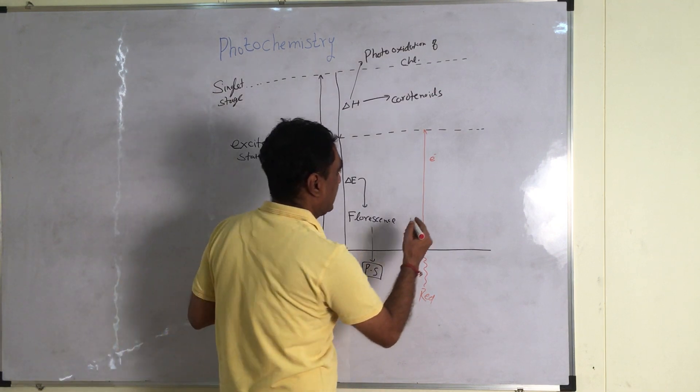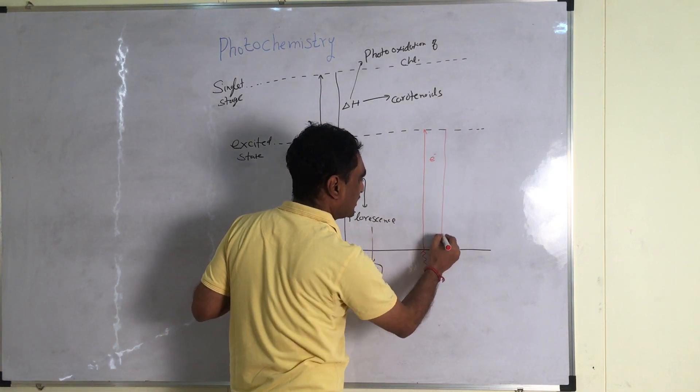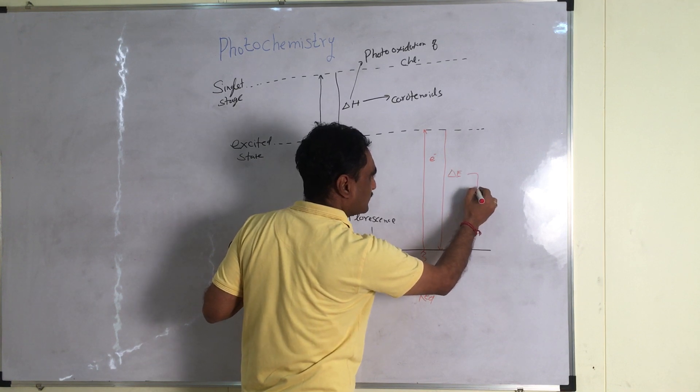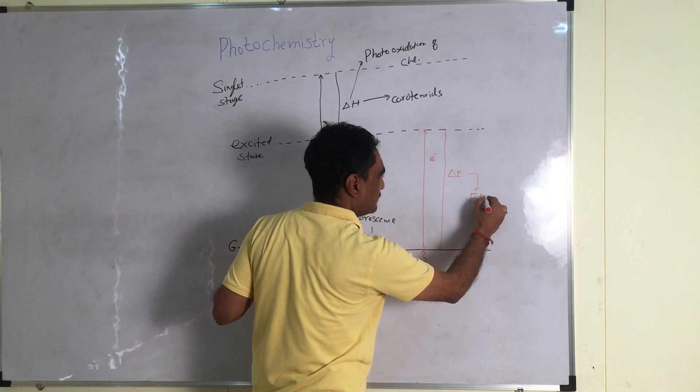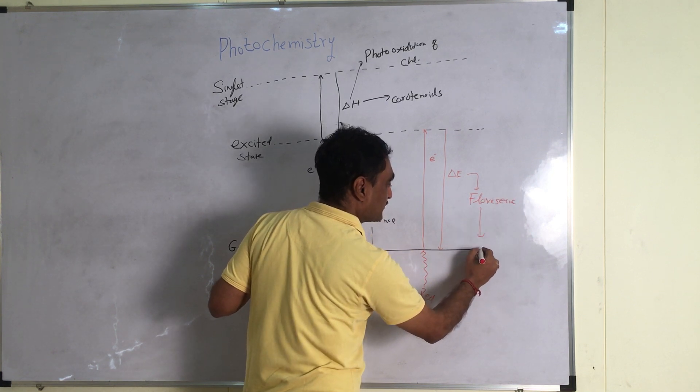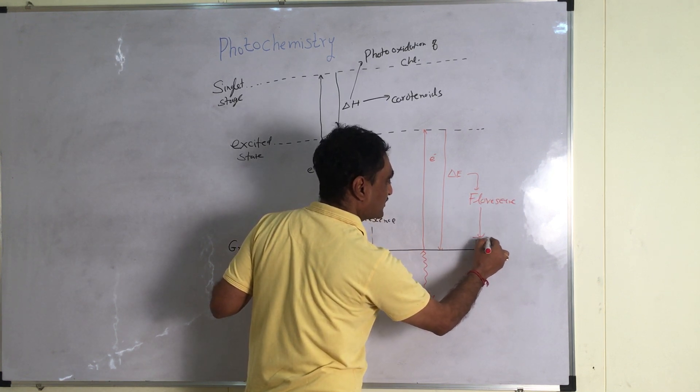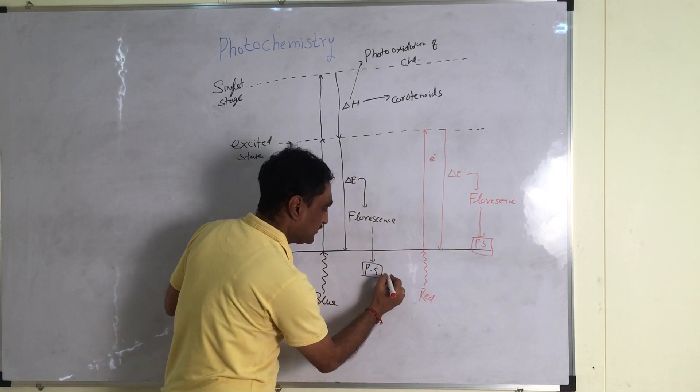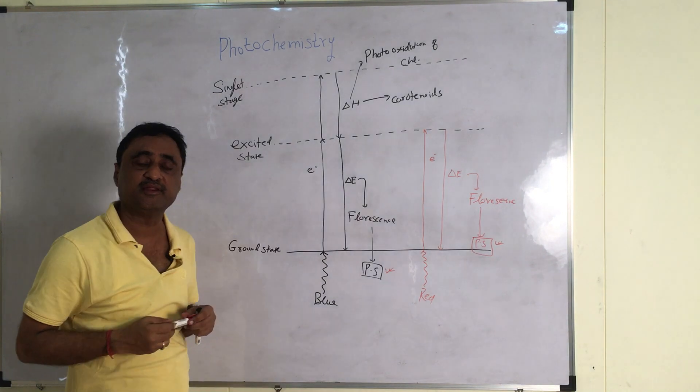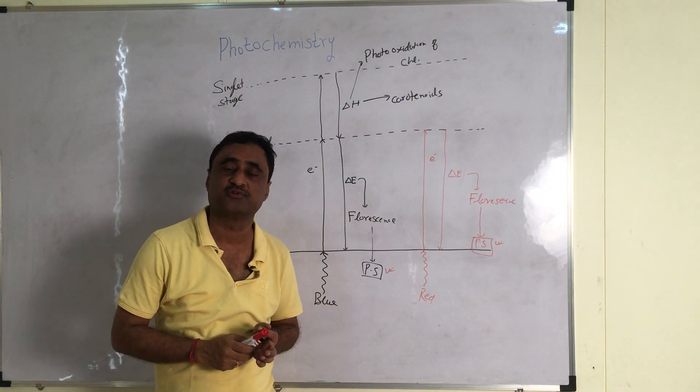Here also, when it returns to ground state, it is also going to release delta E that also shows the phenomenon of fluorescence and this will also be utilized for photosynthesis. Now you see, the photosynthesis yield in both cases remains the same, there is no difference.